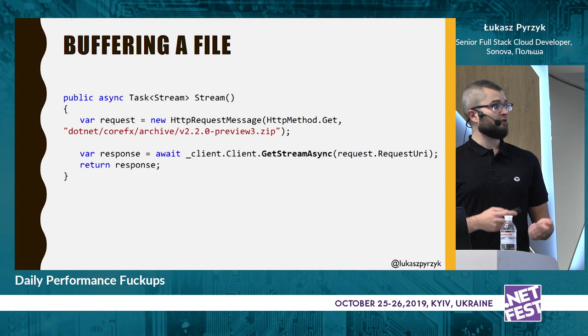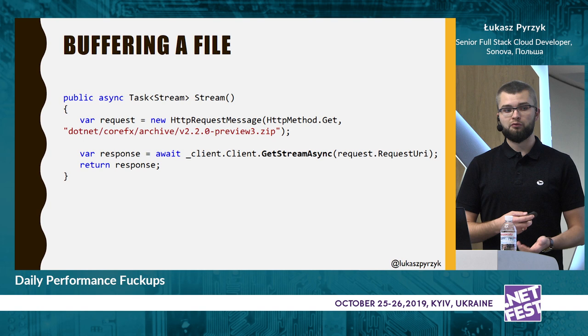To fix it, use the overload version of SendAsync that accepts an enum called HttpCompletionOption. You need to check ResponseHeadersRead — it says: I want to send a request, and when it's ready I want to read only the headers to check if it was successful, but I don't want to touch the content because I want to stream it to disk or to another endpoint. When you deploy with this fix, memory stays constant, no garbage collections, and everything is streamed. Alternatively, just call GetStreamAsync on the HttpClient.